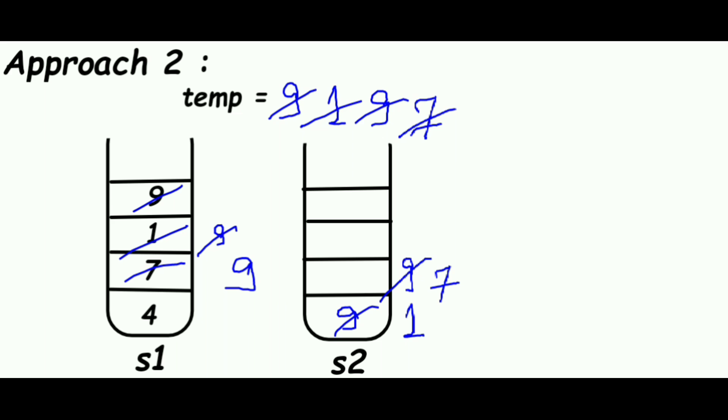Now we will take 9 again and 9 will be pushed directly to stack S2 as it's greater than 7. Now we will take 4. As 4 is less than 9 and also less than 7, we will pop 9 and 7 from stack S2 and push them into stack S1.